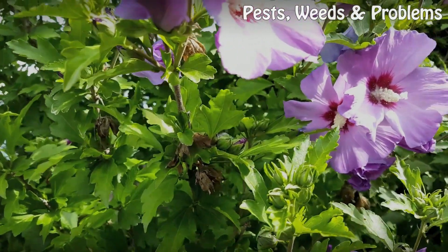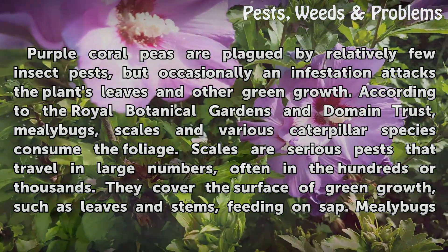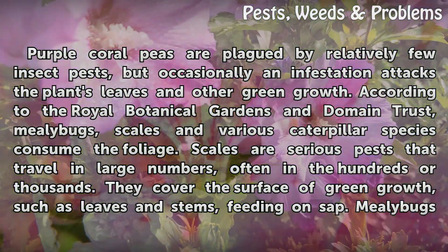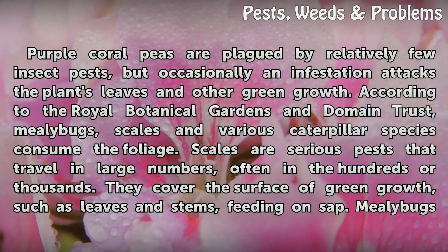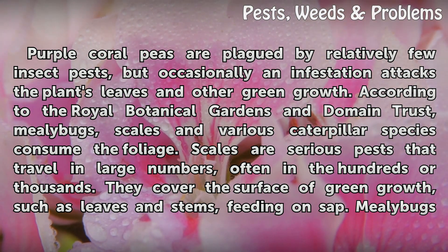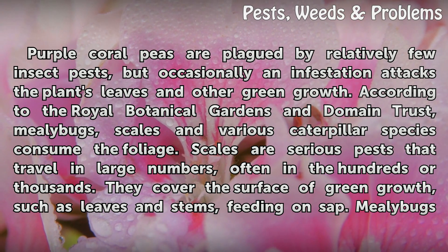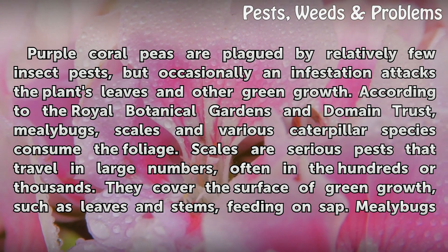Insects. Purple coral peas are plagued by relatively few insect pests, but occasionally an infestation attacks the plant's leaves and other green growth. According to the Royal Botanical Gardens and Domain Trust, mealybugs, scales, and various caterpillar species consume the foliage.